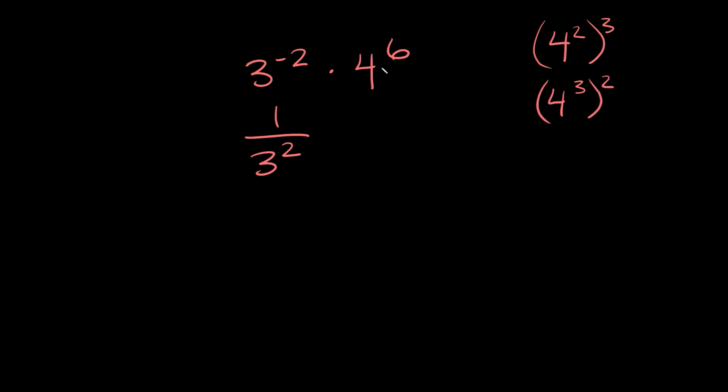Why can I rewrite 4 to the 6 like this? Well, because whenever you have an exponent raised to another exponent or a power raised to a power, in order to simplify these all you have to do is multiply them. So what's 2 times 3? Well that's equal to 6. So that's why this is equal to 4 to the 6.